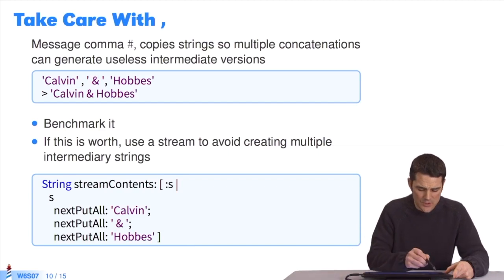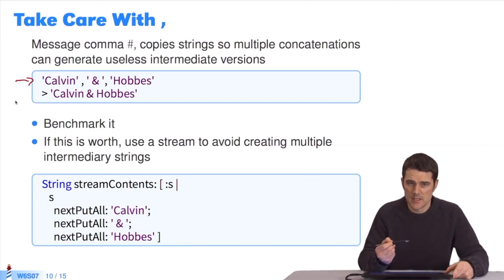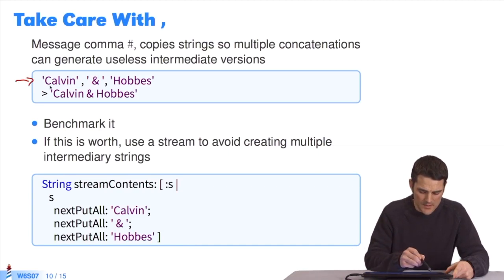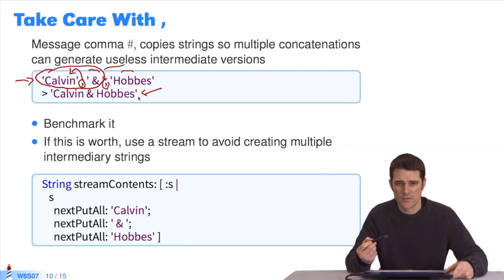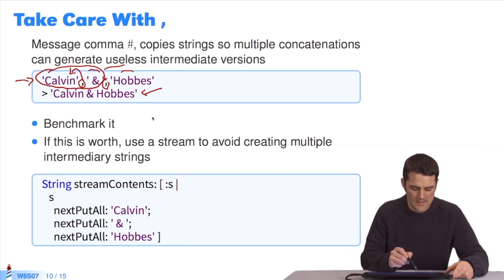If I take the same example, you must understand that I generated intermediate versions that are useless. So I have this first message that we sent to this string with this value. We have a first concatenation string that was generated. This concatenation sent the message comma with this value and another string was created, the final result. An intermediate string we haven't seen was generated and it makes you lose time in your calculations.